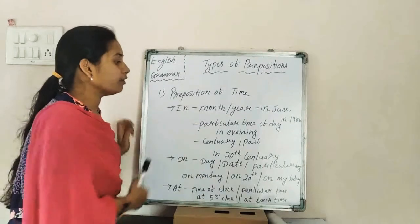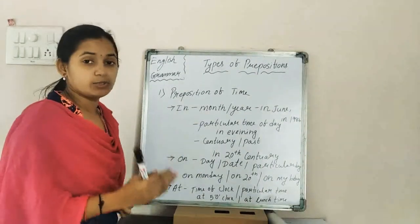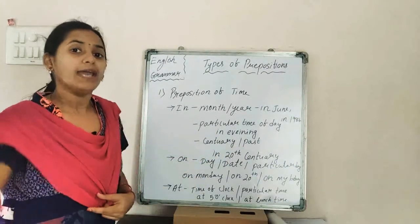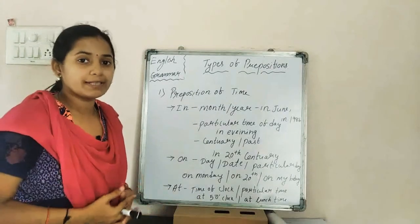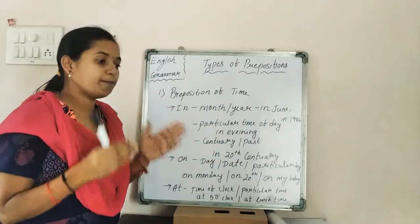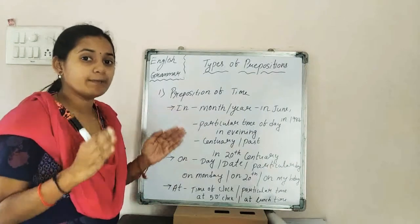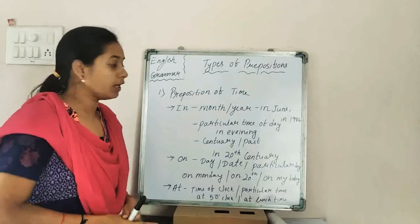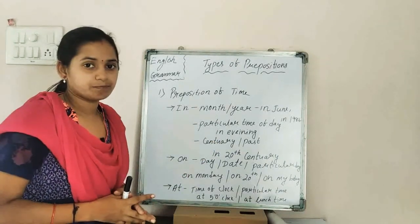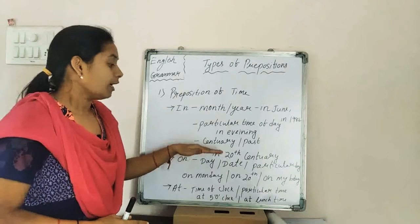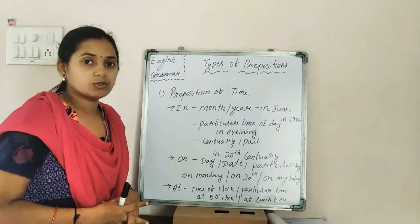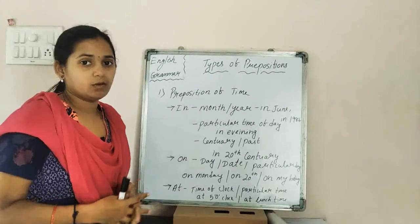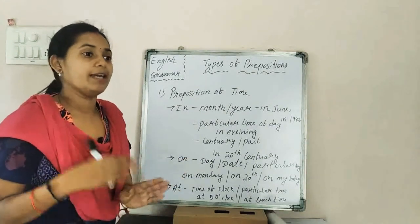We also use 'in' for a particular time interval of the day — for example, in the evening, I am going to market. We say in the morning: I got up early in the morning. So for short time durations of the day, we use 'in' — in the morning, in the evening. But for night, we use 'at.'